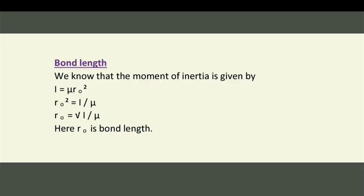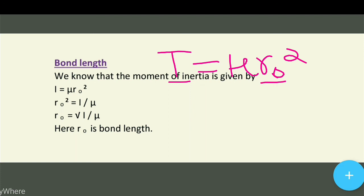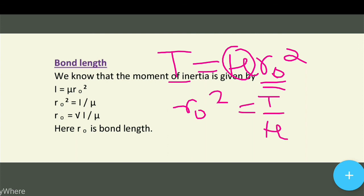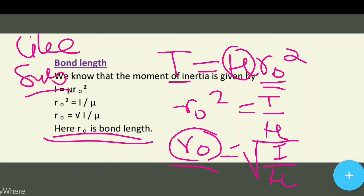ایک اور چھوٹا سا topic ہے: bond length۔ ہمیں پتا ہے moment of inertia I = μ r0²، تو r0 = √(I/μ) — یہ ہمارا bond length ہے۔ اگر آپ کو یہ video پسند آیا تو اسے like کریں اور Learning Science کو subscribe کریں۔ Thanks!